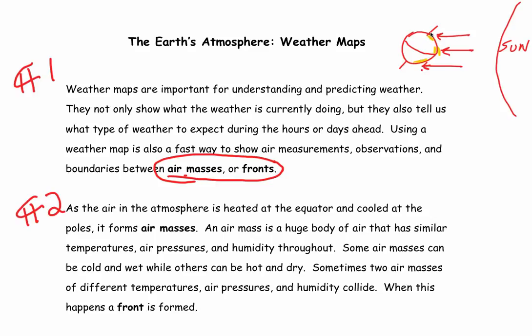In the summertime, the North Pole gets more warming than the South Pole, but in general the equatorial regions on the Earth get more heating, and so more warming of the atmosphere consistently year-round.